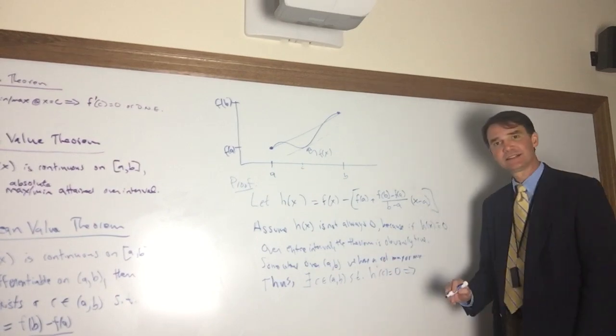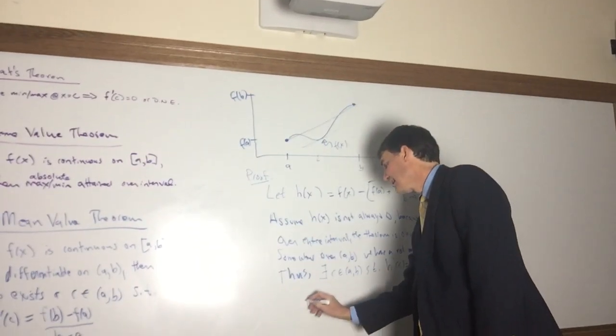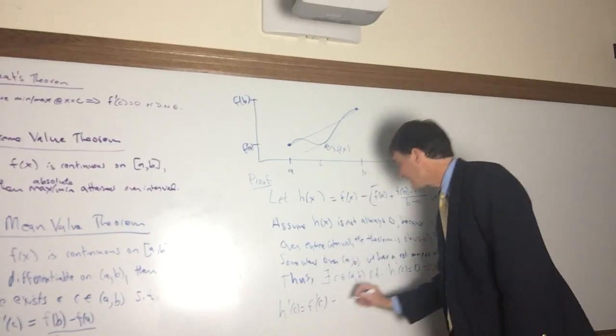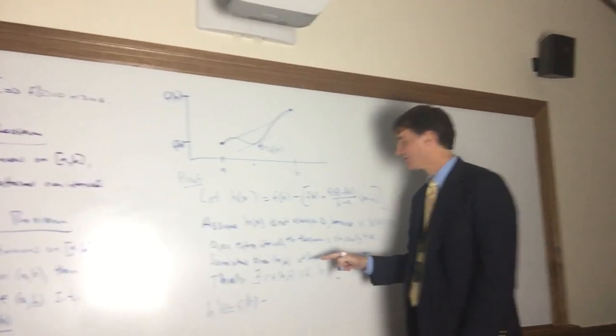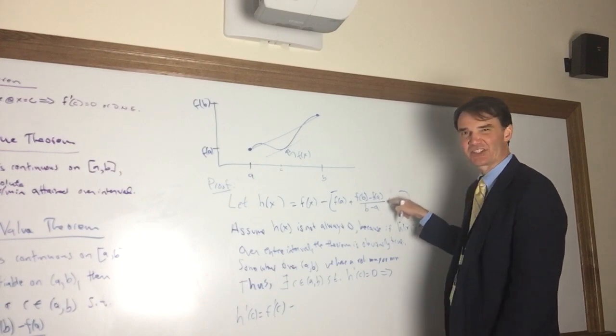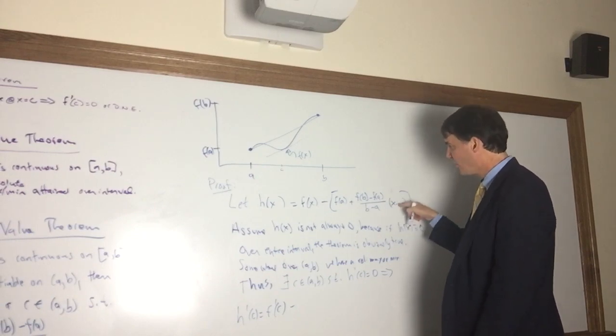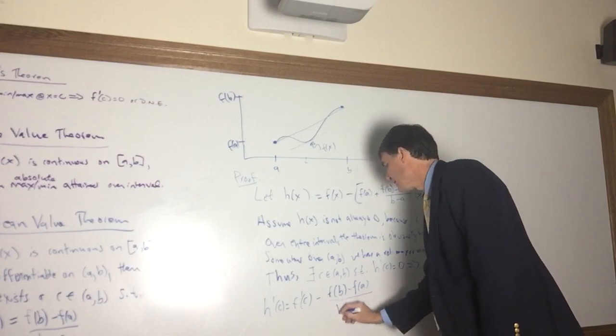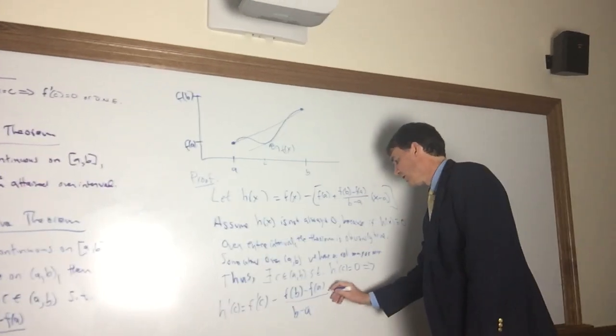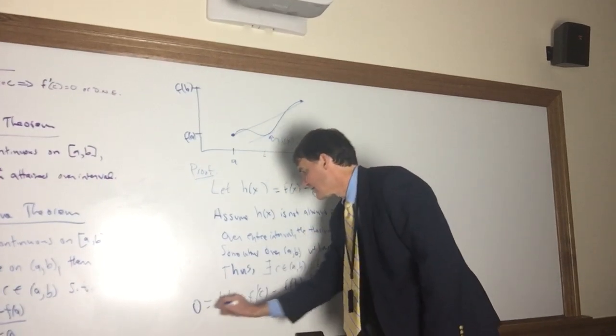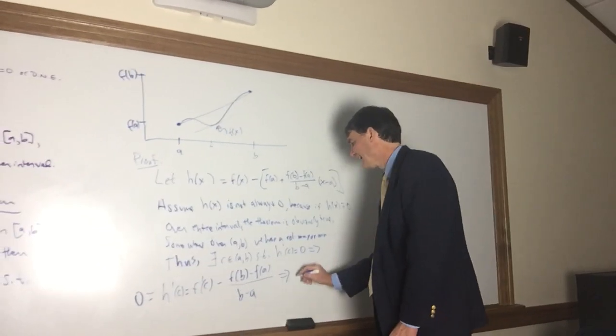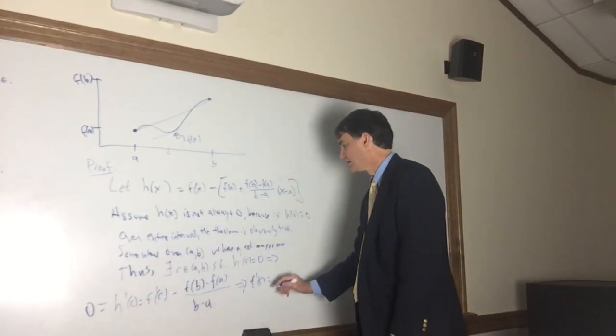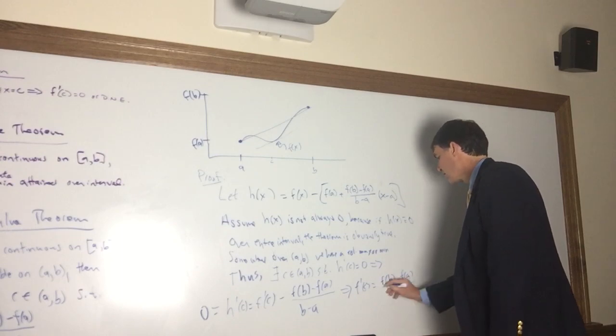But that implies, when we look at what h'(c) is, well, h'(c) is equal to f'(c) minus—well look, this is just a number, f(a), so it's gone when we take the derivative. And this, the (x - a), you can think of it as a chain rule if you want with a power of one, but this x is going to go away and we'll just have [f(b) - f(a)]/(b - a), implying that—oh, and all of this equals zero, right? So I should say zero equals this. So this implies that f'(c), this place where this h function had a derivative that was zero, equals [f(b) - f(a)]/(b - a).